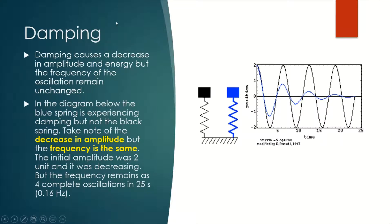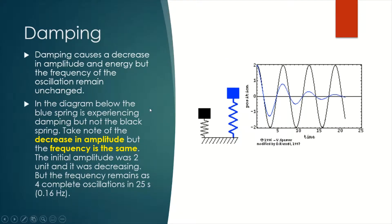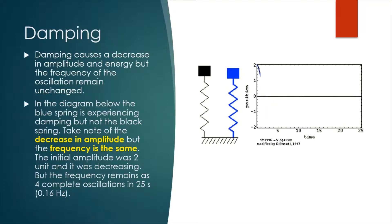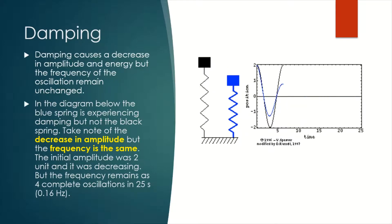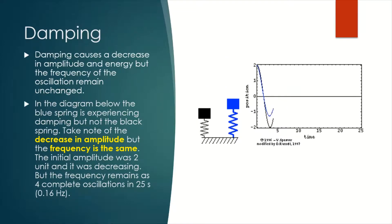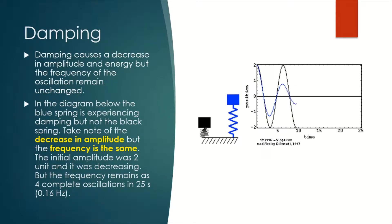Look at these two springs — the black spring and the blue spring. We can see that the black spring continues to oscillate up and down without slowing down, so it does not undergo damping.